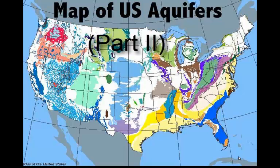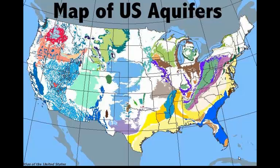This is a map of the major aquifers across the United States. You can see that there are a great number of them, all with different color schemes. From the Florida Panhandle all the way up to the Pacific Northwest, there are a variety of geologic formations that allow for the collection of water.